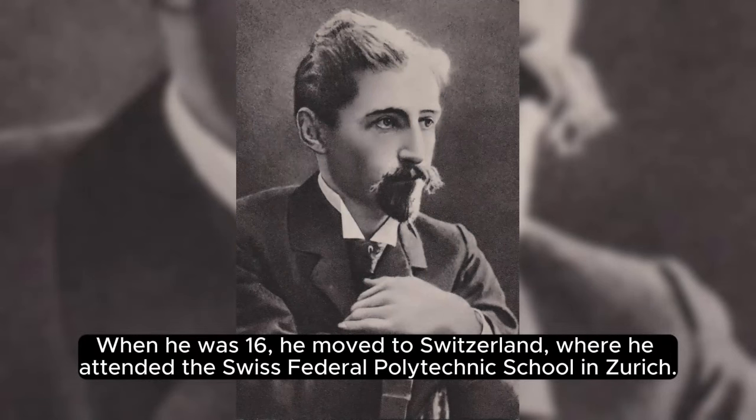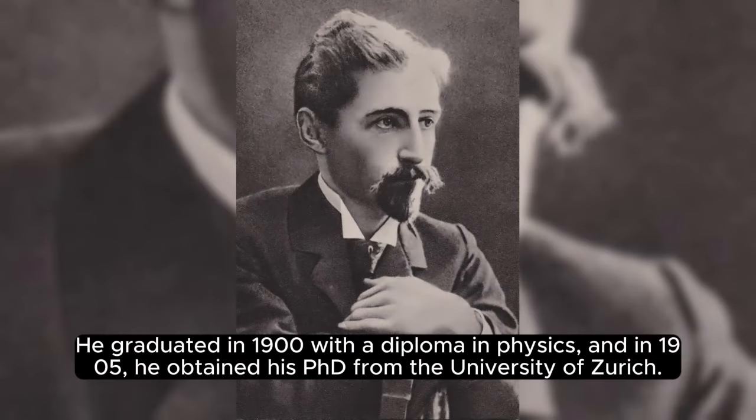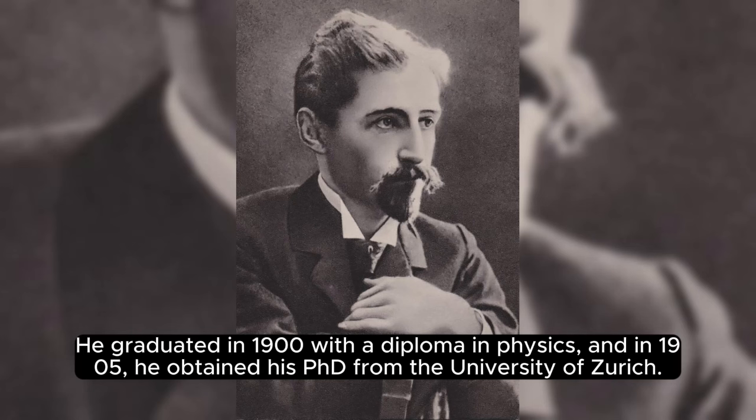When he was 16, he moved to Switzerland, where he attended the Swiss Federal Polytechnic School in Zurich. He graduated in 1900 with a diploma in physics, and in 1905, he obtained his PhD from the University of Zurich.